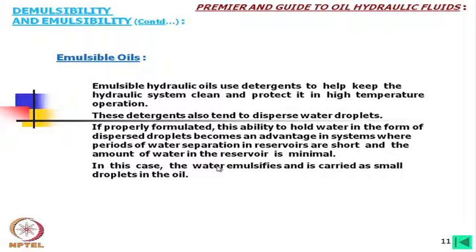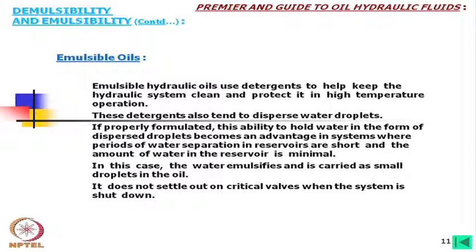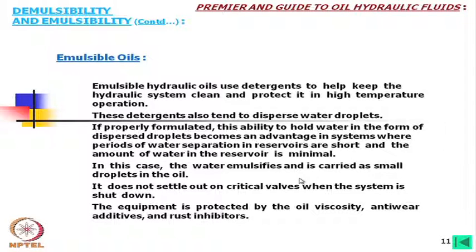Emulsible hydraulic oils use detergents to help keep the hydraulic system clean and protect it in high-temperature operations. These detergents also tend to disperse water droplets. If properly formulated, the ability to hold water as dispersed droplets becomes an advantage in systems where periods of water separation in reservoirs are short and the amount of water is minimal. The water emulsifies and is carried as small droplets in the oil; it does not settle out on critical valves when the system is shut down. The equipment is protected by the oil's viscosity, anti-wear, and rust inhibitors.